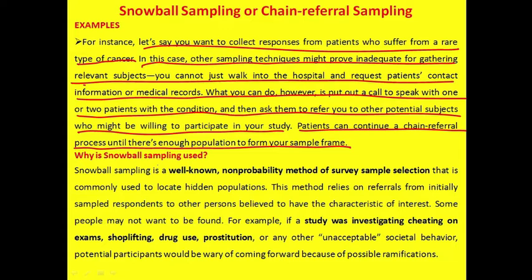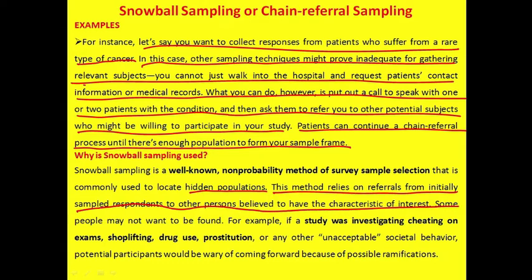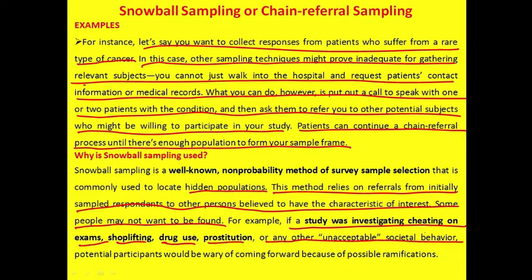Snowball sampling is a well-known non-probability method commonly used to locate hidden populations. It relies on referrals from initially sampled respondents to other persons believed to have the characteristics of interest. Some people may not want to come forward — for example, in studies investigating cheating on exams, shoplifting, drug use, or other unacceptable societal behavior. In such cases, snowball or chain referral sampling is used to reach hidden populations.